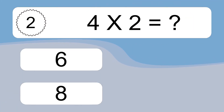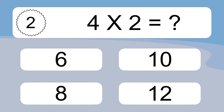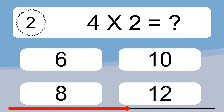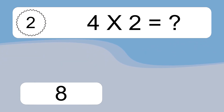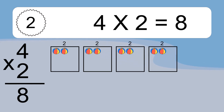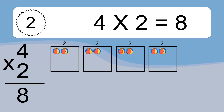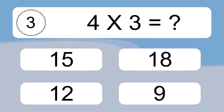4 times 2 equals what? 4 times 2 equals 8. We have 4 boxes, and each box has 2 colorful balls inside. If you count all the balls in all the boxes together, you will have 4 times 2 balls. This equals 8 balls.